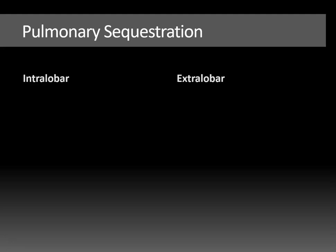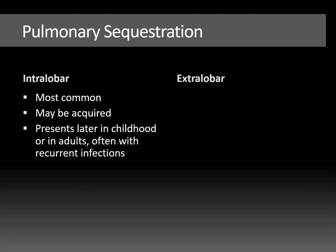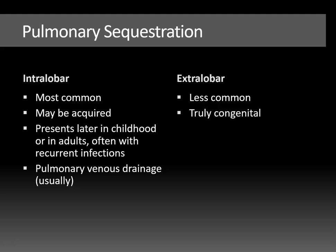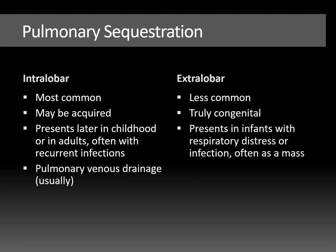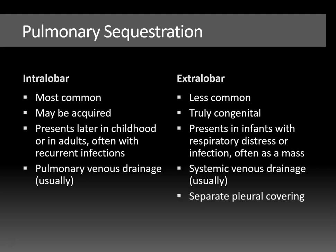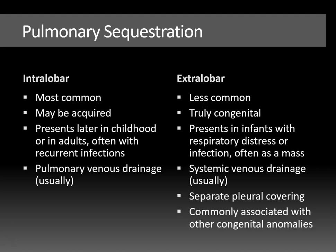How do you differentiate between the two types? The intralobar type is more common, and strangely enough, it might actually be acquired. It usually presents later in childhood or in adults, often with recurrent infections, like in this case. They usually have pulmonary venous drainage, but it may be aberrant. The extralobar type is less common and truly congenital, presenting in infants with respiratory distress or infection, often with a mass, and usually has systemic venous drainage — so both systemic arterial supply and systemic venous drainage. It has a separate pleural covering and is often associated with other congenital anomalies. Both types are typically treated with surgical resection, although it may vary depending on the case.